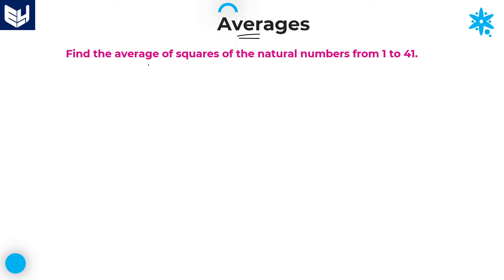See here — find the average of squares of natural numbers from 1 to 41. We need to find the average of squares of natural numbers from 1 to 41.